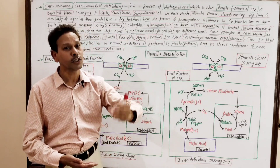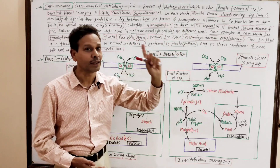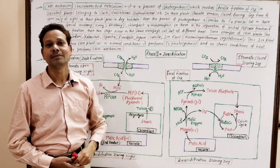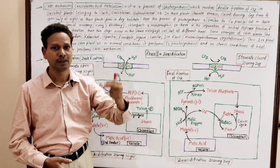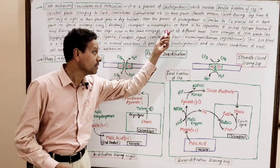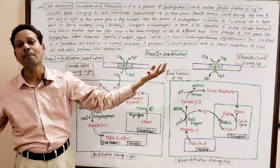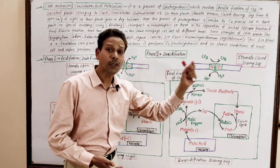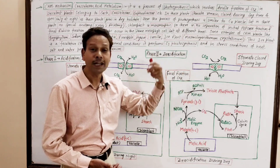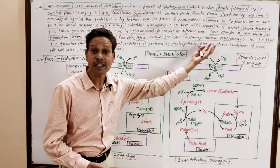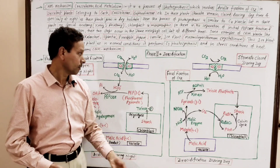Because in normal conditions, the ice plant Mesembryanthemum shows the C3 cycle. But in stress conditions — like heat, salt stress, or water deficiency — the ice plant changes into a CAM plant. It means in normal conditions this plant shows C3 cycle, but when conditions become adverse, under stress with water deficiency, this ice plant switches to a CAM plant.